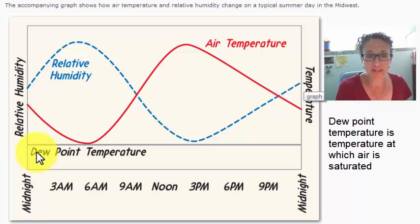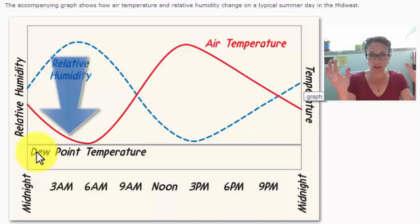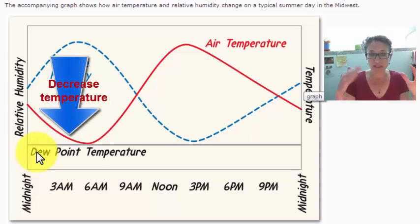The dew point temperature is the temperature to which we have to lower the air to reach saturation. If the dew point temperature isn't changing throughout the day, that means that the water vapor content, the absolute amount of water vapor that's in the air, doesn't change. So we have the same amount of water in a blob of air, and we decrease the temperature.